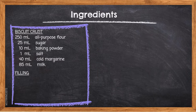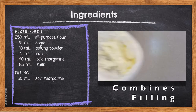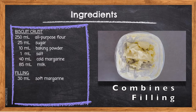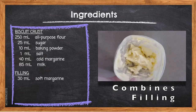Filling — 30ml Soft Margarine. This fat will help act as glue, binding the filling ingredients together and holding them to the biscuit crust. As the margarine melts in the oven, the filling ingredients will combine, making a gooey caramel center.